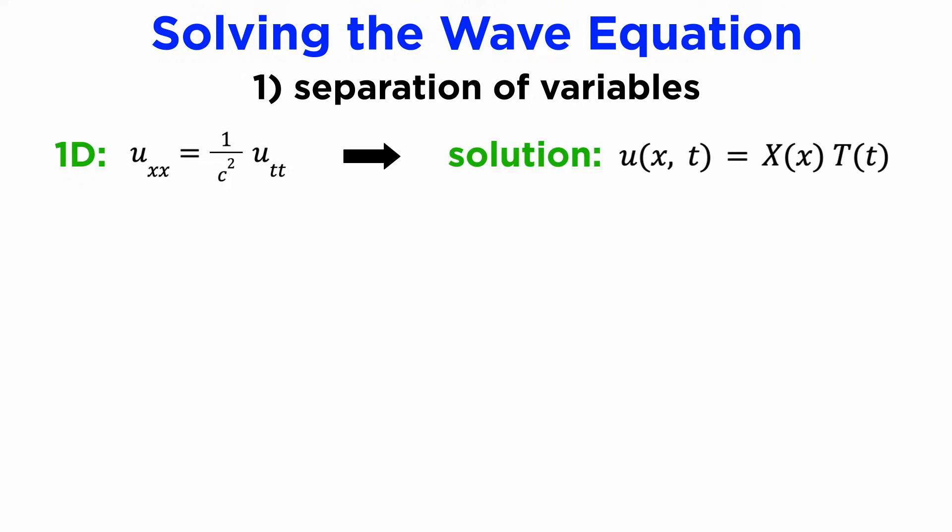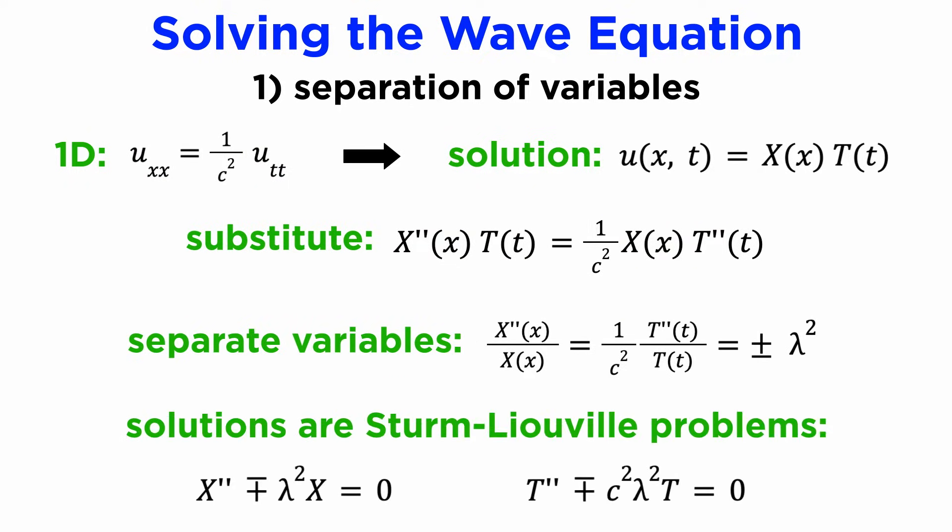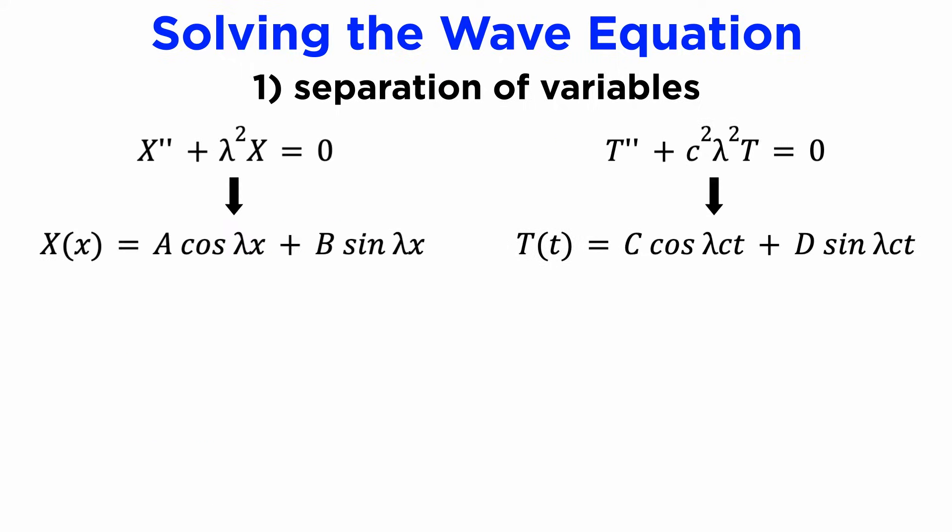For separation of variables, we assume that our solution u of xt is the product capital X of x times capital T of t. Substituting in and separating the variables leads to two Sturm-Liouville problems, and if we choose negative lambda squared as our separation constant, we will get trigonometric solutions for each of x and t, which is usually going to be the better choice for describing waves.